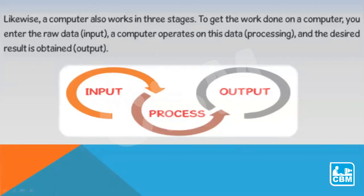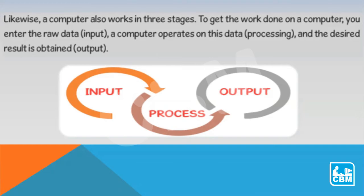A computer also works in a similar manner. In order to get work done from the computer, we enter raw data as input to the computer. Then the computer operates on this data, or processes this data, in order to give us the desired result, which is nothing but our output. Computers are given instructions to perform a particular task using different programming languages. A few popular examples are Python, C, C++, Java and so on. Computers follow a set of instructions to perform a particular task — this is nothing but a program. Basically, a program is a sequence of instructions that specifies how to perform a computation.